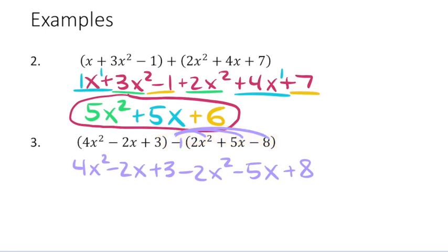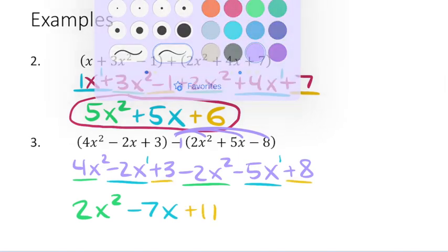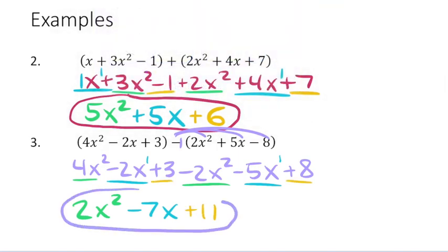So I drop down everything exactly the same from the left set of parentheses. On the right set, I get a negative 2x squared, a negative 5x, and a negative times a negative makes a positive 8. This step of distributing the negative is the most important part. Then it's back to combining like terms: 4x squared and negative 2x squared give 2x squared, negative 2x and negative 5x give negative 7x, and 3 and 8 make 11. The final answer is in standard form.